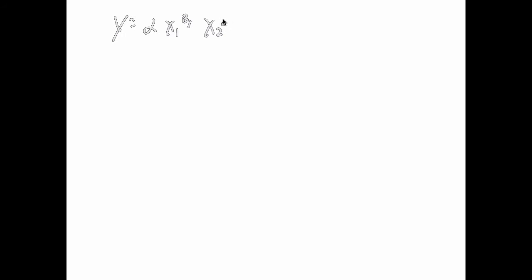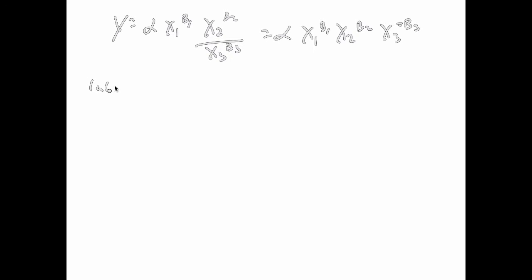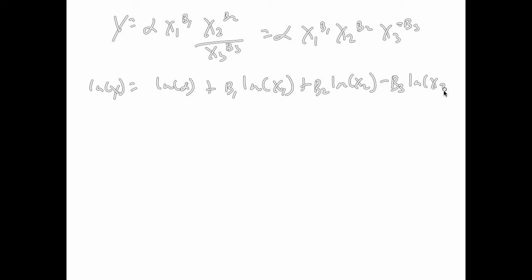Here's a slightly more complicated example. It's the same thing as alpha times x1 to the beta 1, x2 to the beta 2, and x3 to the negative beta 3. So the actual outcome is going to be the same as before, except for a minus in front of the last term, because you're pulling down negative beta 3 instead of beta 3.